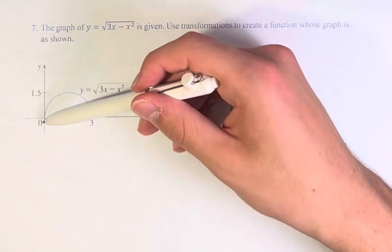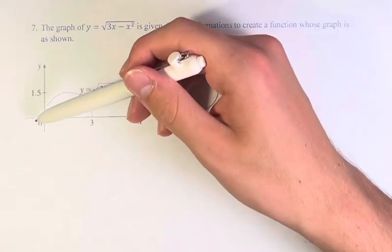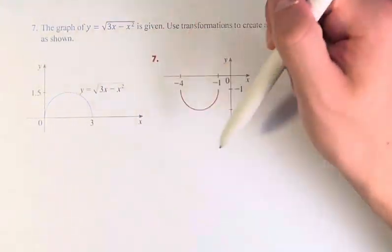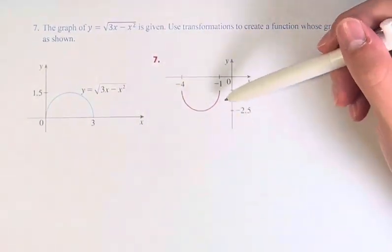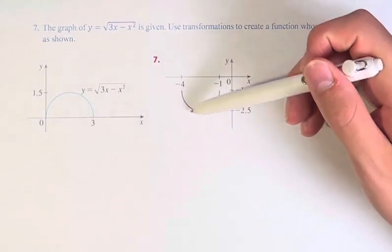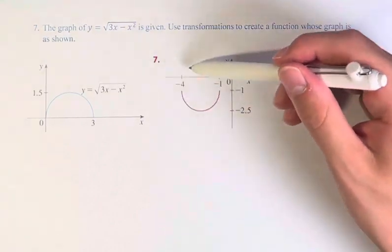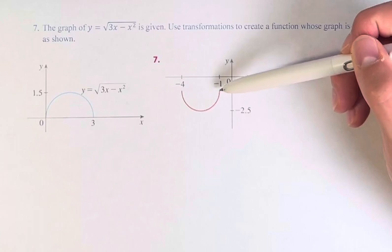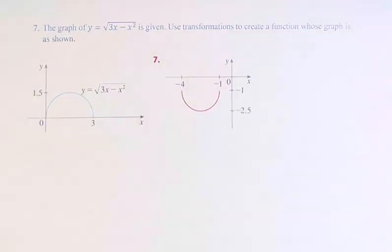So here we have a semicircle going from 0 to 3, and it reaches a height of 1.5. And here we have a semicircle, which is the other half of the circle, the bottom half of this imaginary circle, going from negative 1 to negative 4, and from negative 1 to negative 2.5.